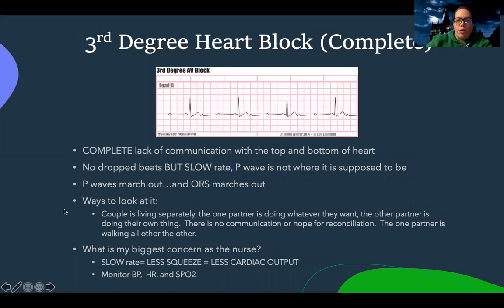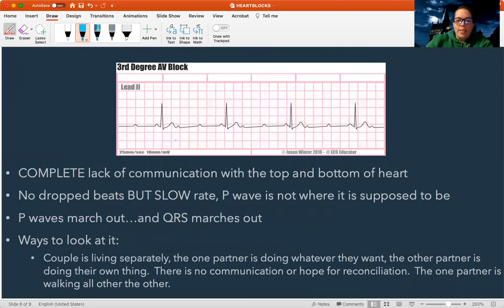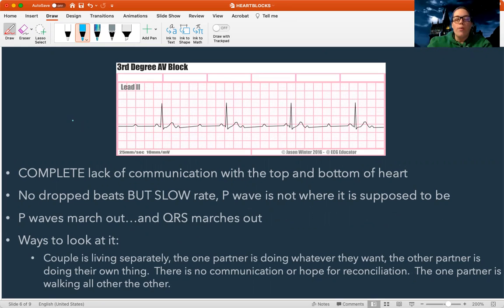The last one is a third degree block — this is complete heart block. What happens is a complete lack of communication. The top of the heart has been trying to send signals, the bottom of the heart's not listening. Think of that couple situation: they're just living completely separate, each doing whatever they want, no communication, no hope for reconciliation. One partner is completely stepping on the other's toes. They don't care what the other is doing — they're just going to do their own thing.